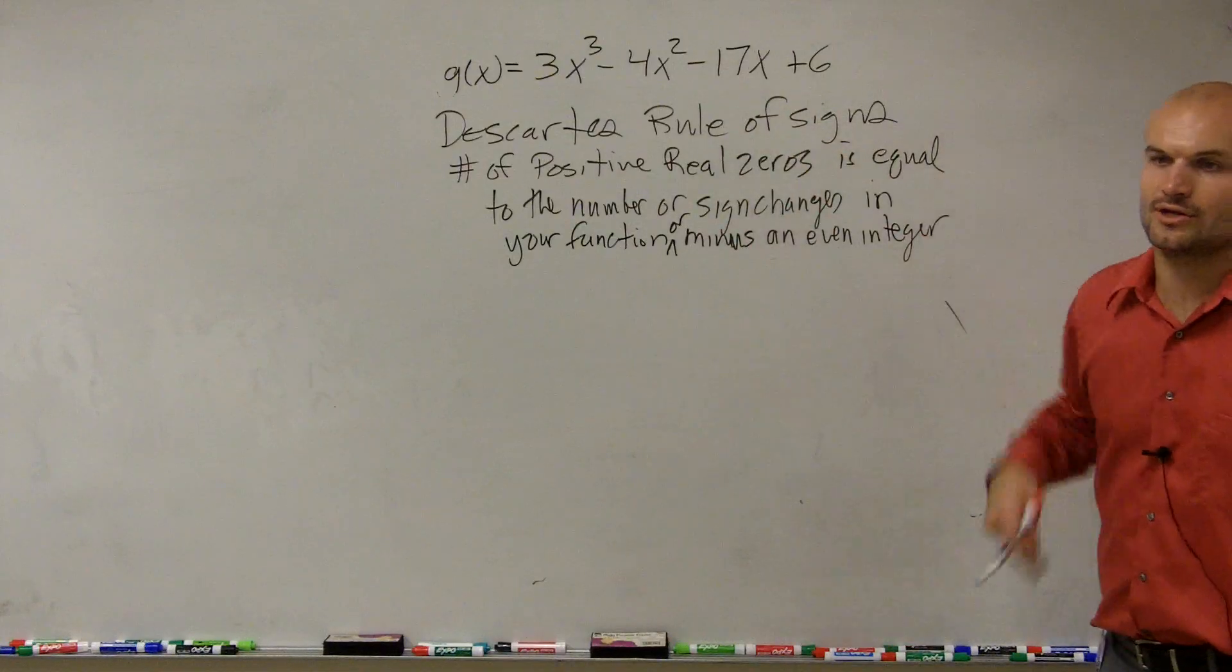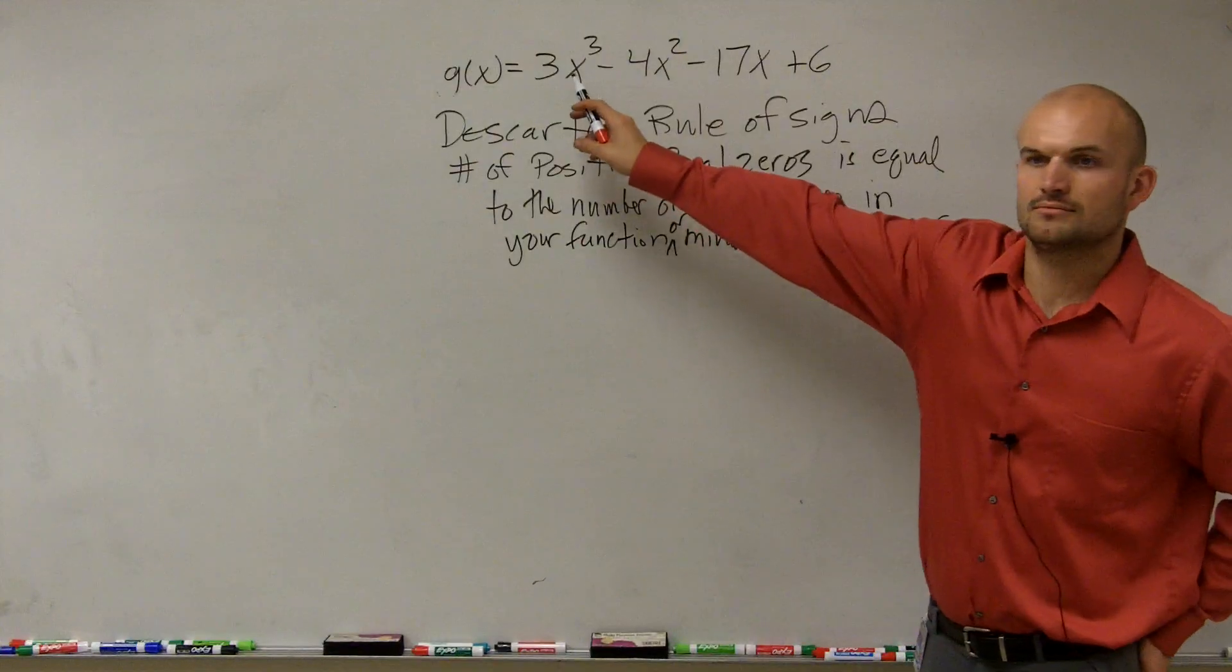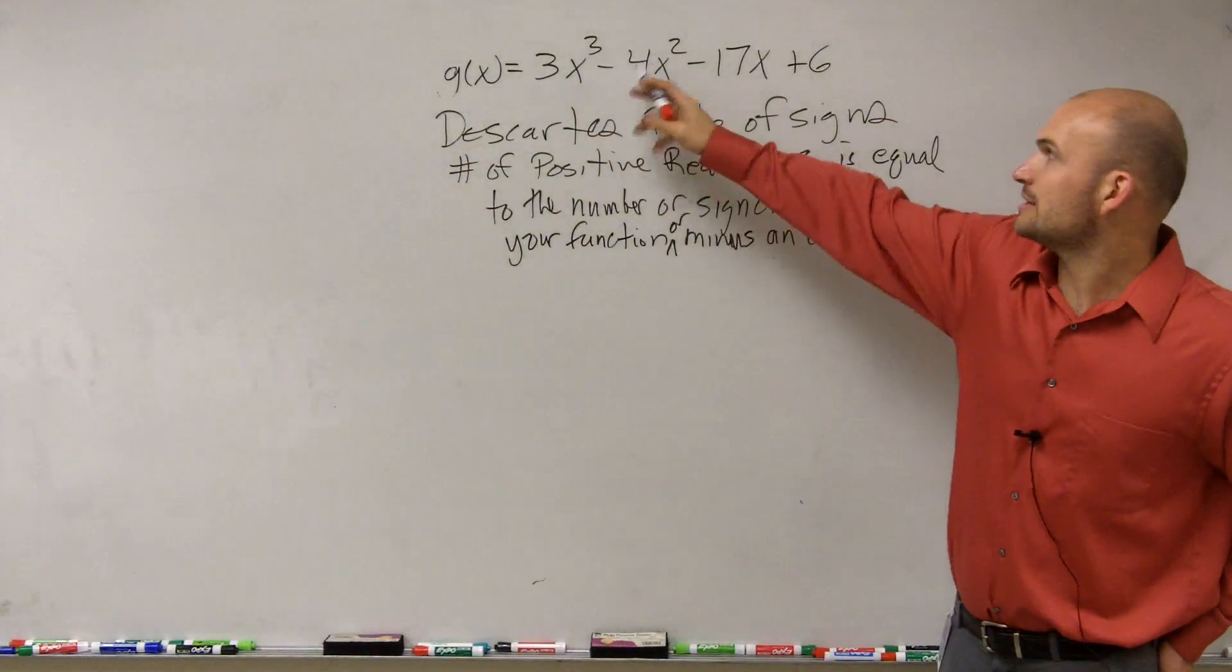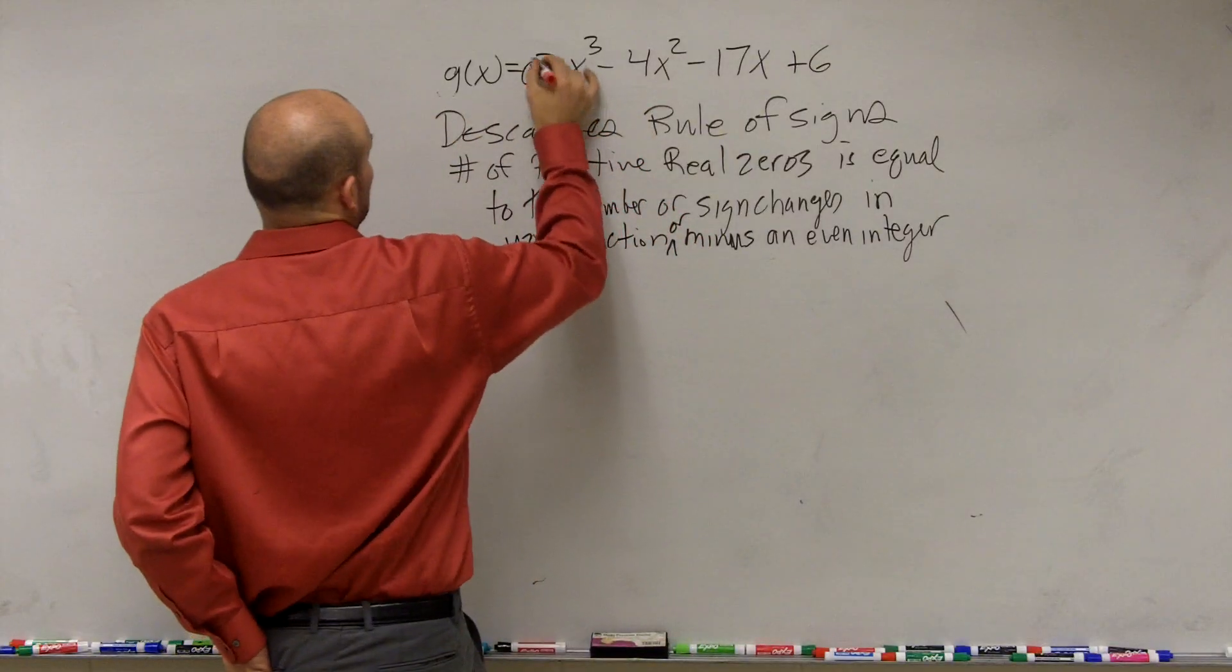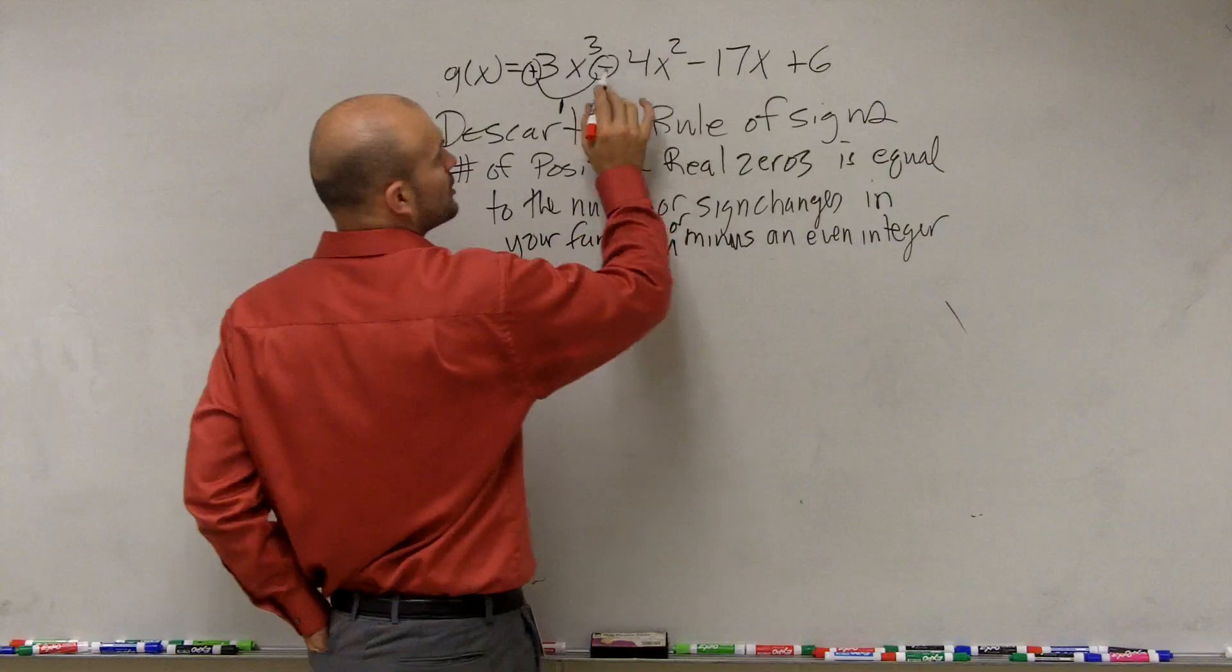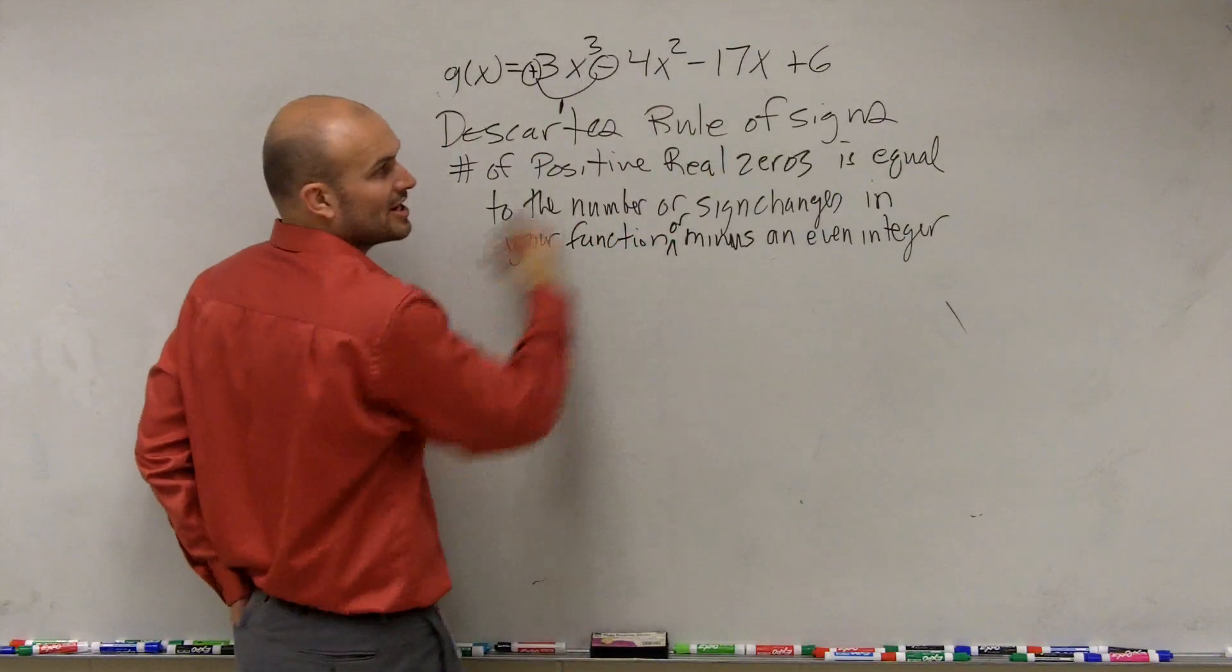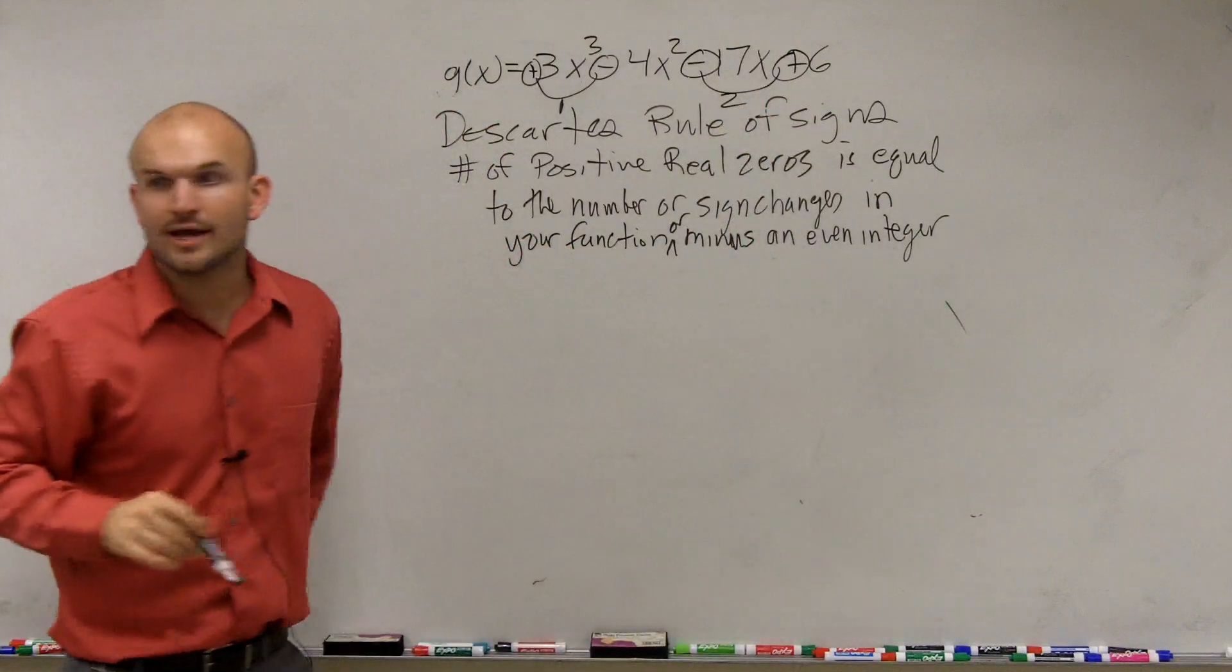So let's go and take a look at, in this first problem, how many sign changes do we have? Well, our first term is what? Positive. And then the next one is negative, right? So we have one sign change. And then we go from negative to negative. That's not a sign change. And then we go to negative to positive. So that's two sign changes, right?